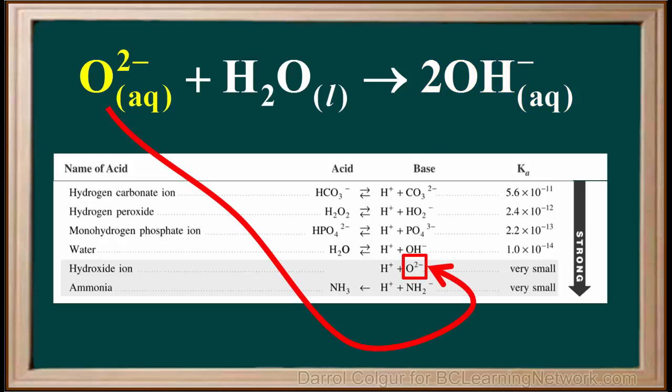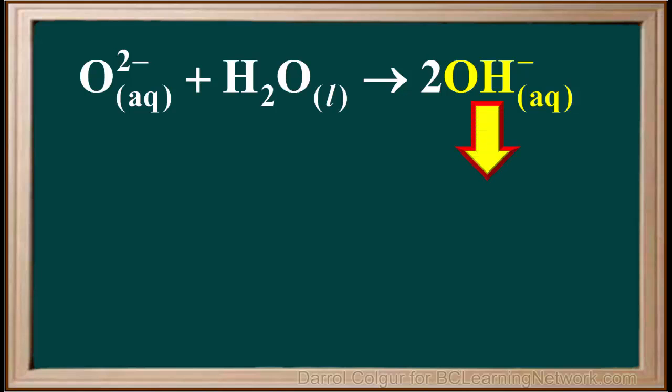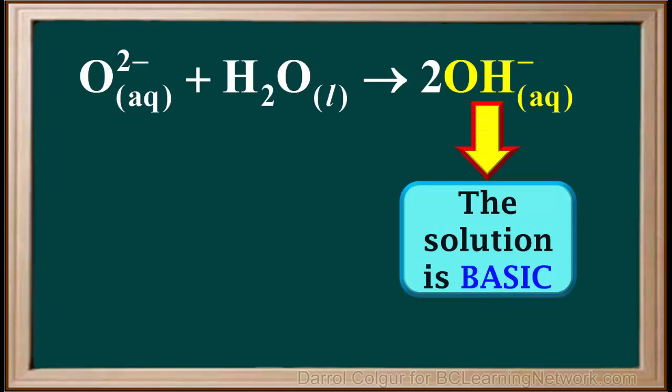Because O2- is a strong base, it reacts completely with water to produce hydroxide ions. So this equation has a single arrow pointing toward the hydroxide. Because OH- ions are produced, the solution is basic.